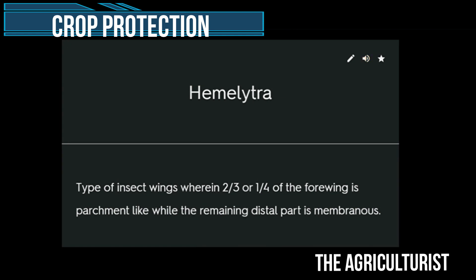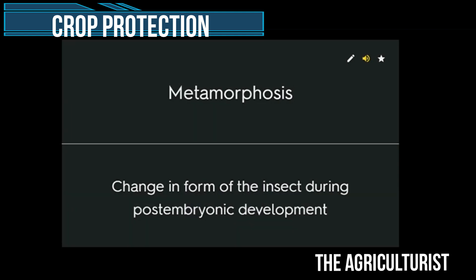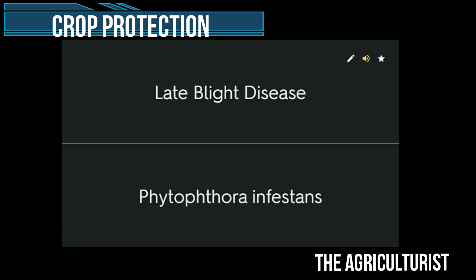Hemelytra: type of insect wings wherein two-thirds or one quarter of the fore wing is parchment-like while the remaining distal part is membranous. Monogenic vertical resistance. Metamorphosis: change in form of the insect during post-embryonic development. Late blight disease — Phytophthora infestans.